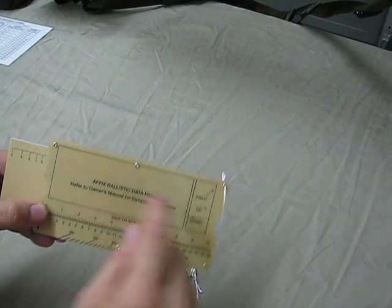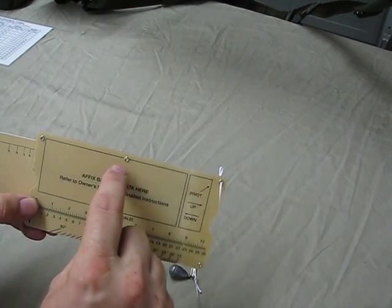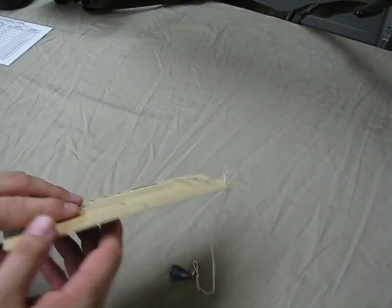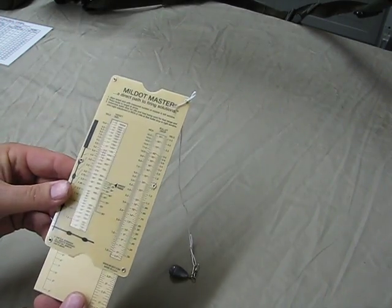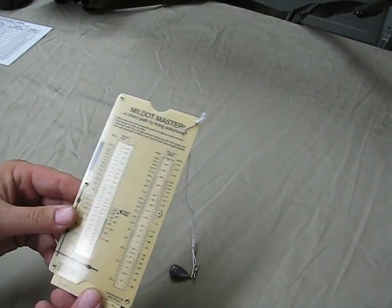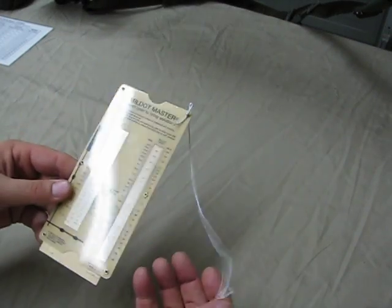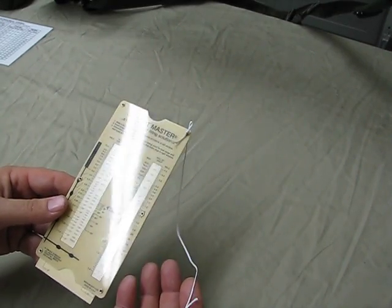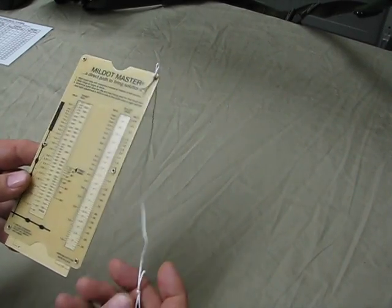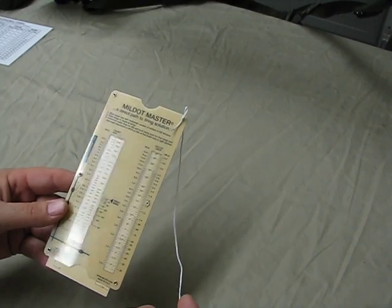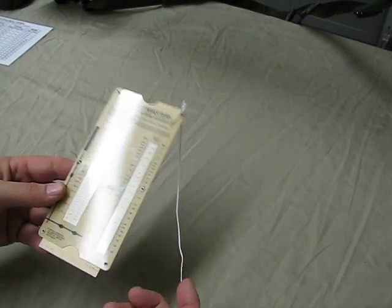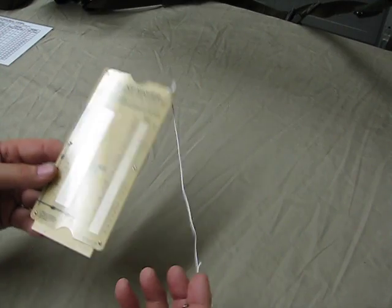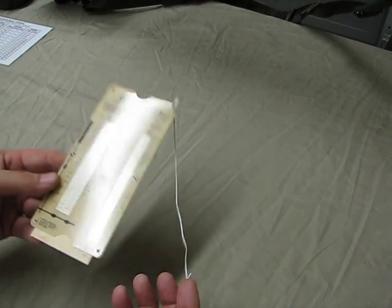On the back here there's a location where you can affix a tag with information on your bullet drop at all the different ranges. This would be all you need. You basically have a way to rangefind and a ballistic computer all in one, bulletproof, lightweight. You can't get a lighter or more rugged package. This thing is only between 30 and 40 dollars depending where you find it online. My rangefinder I use is like 400 dollars.